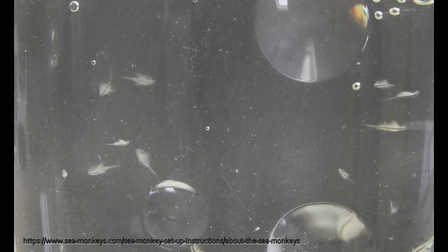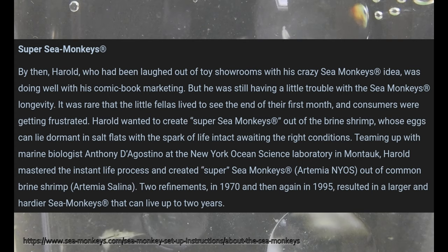As we have seen earlier, the materials of the kit call Artemia Nyos a hybrid of Artemia that was born at the New York Ocean Science Laboratory. The official Sea Monkey website goes into more detail. By then, Harold von Braunhut, the inventor of Sea Monkeys, was doing well with his comic book marketing but he was still having a little trouble with the Sea Monkey's longevity. It was rare that the little fellas lived to see the end of their first month. Harold wanted to create super sea monkeys. Teaming up with marine biologist Anthony D'Agostino at the New York Ocean Science Laboratory in Montauk, Harold mastered the instant life process and created super sea monkeys, Artemia Nyos, out of the common brine shrimp Artemia Salina. Two refinements in 1970 and then again in 1995.